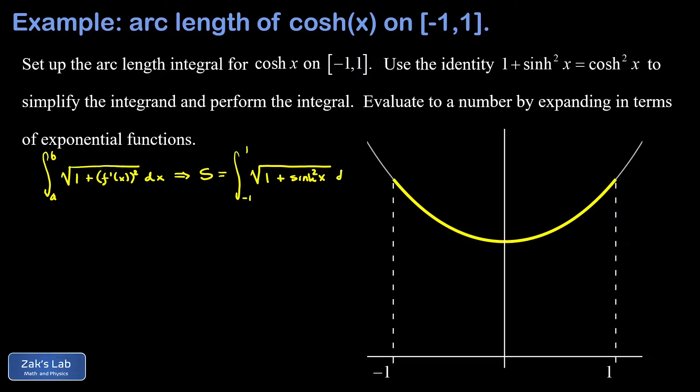We're given a hint in the problem. There's an identity relating the hyperbolic sine and hyperbolic cosine: one plus the hyperbolic sine squared turns out to be cosh squared. So when we take the square root of this we just end up with the integral from negative one to one of cosh x dx.